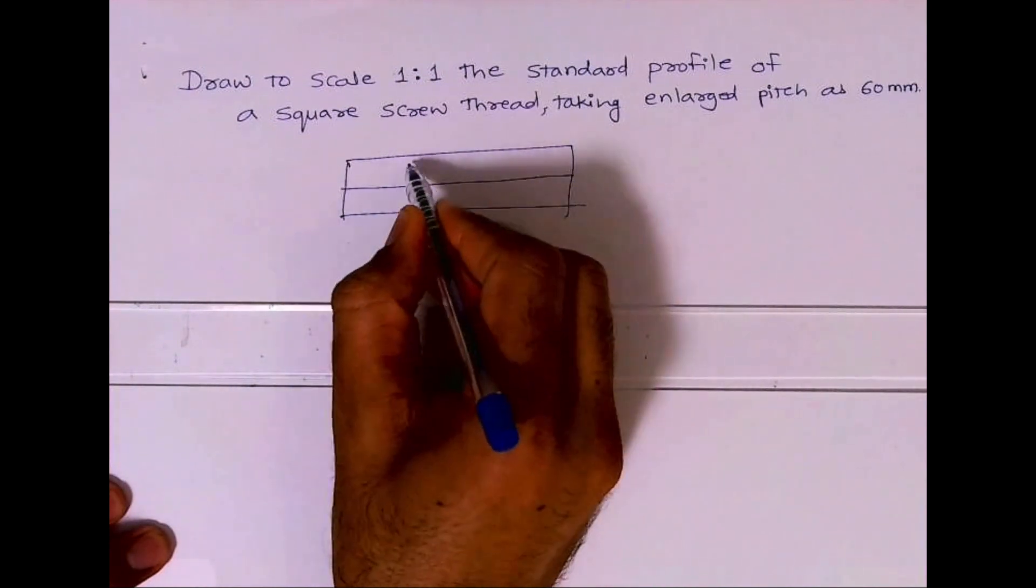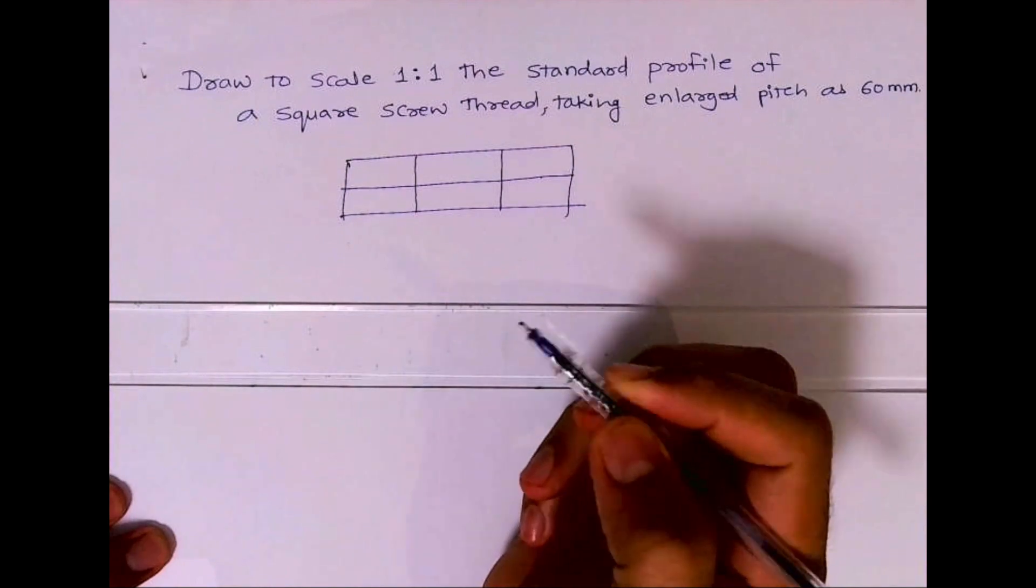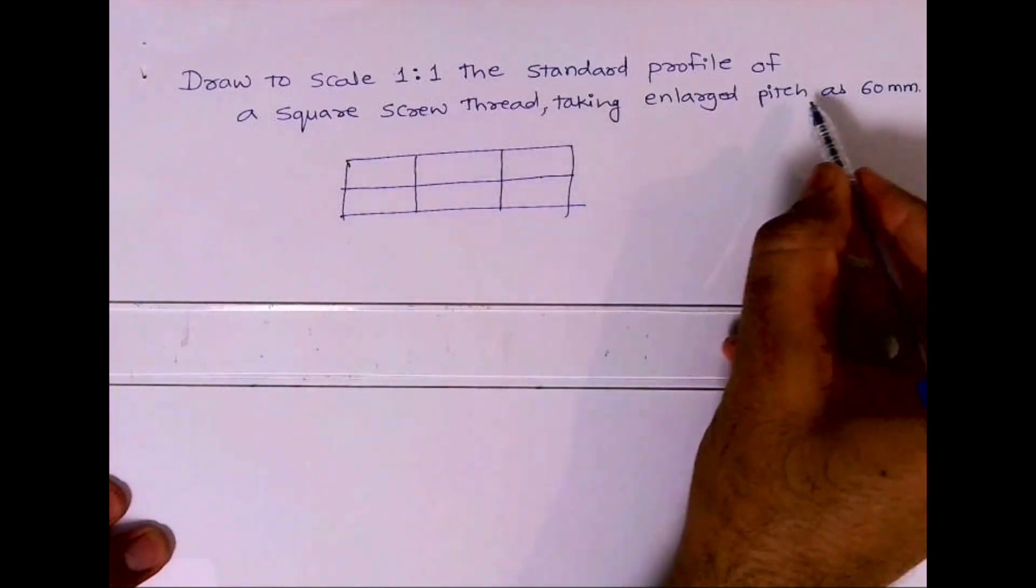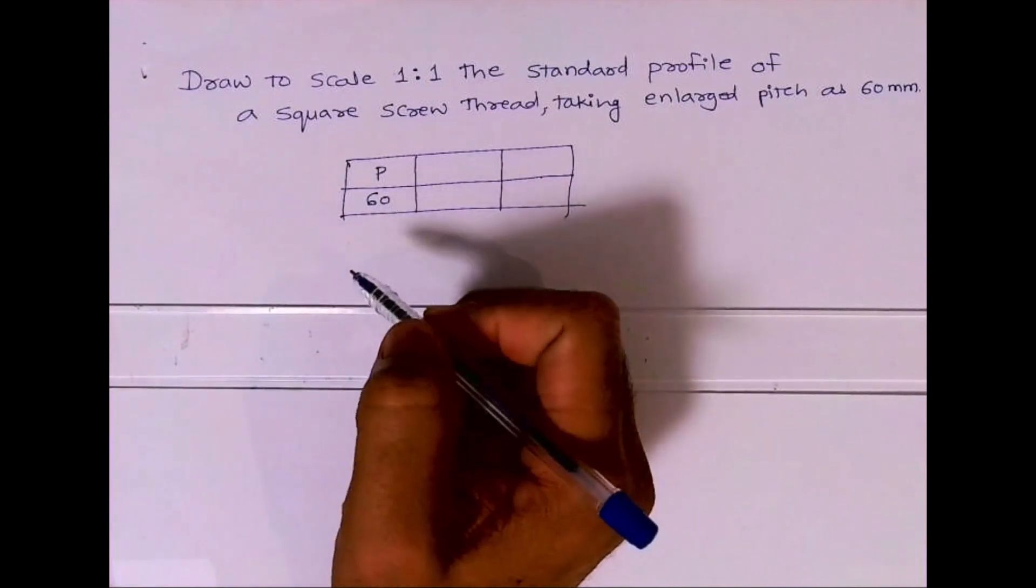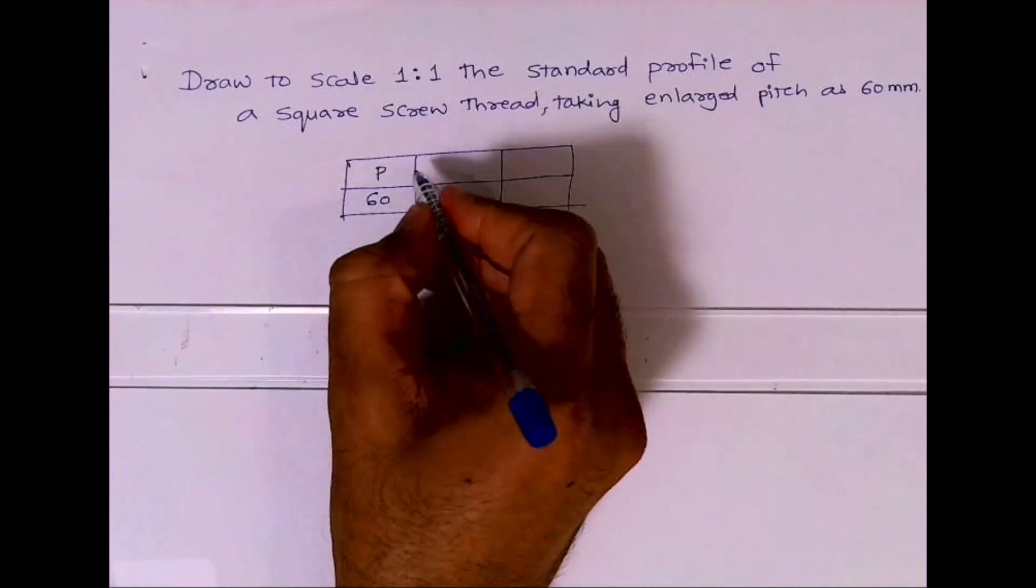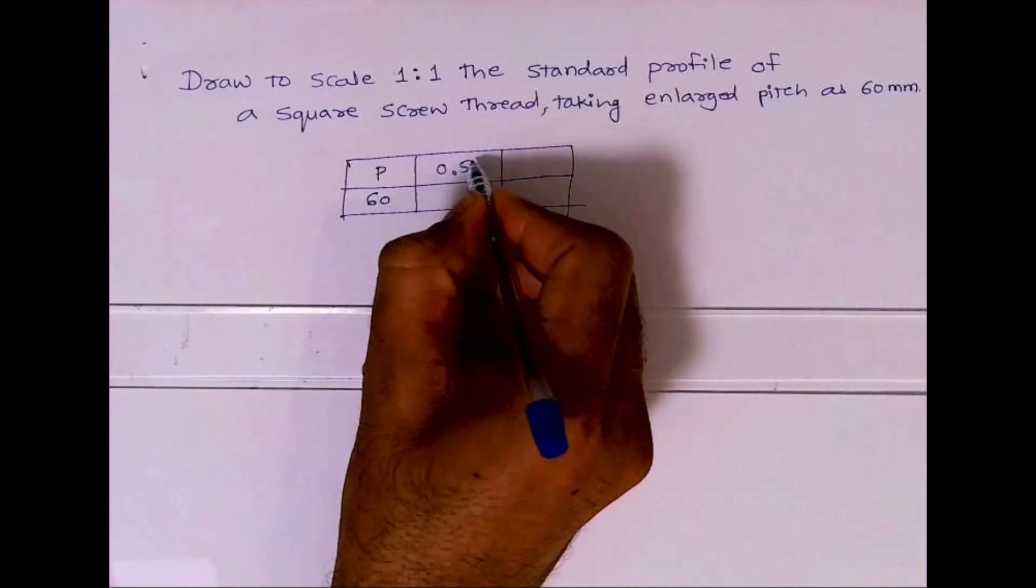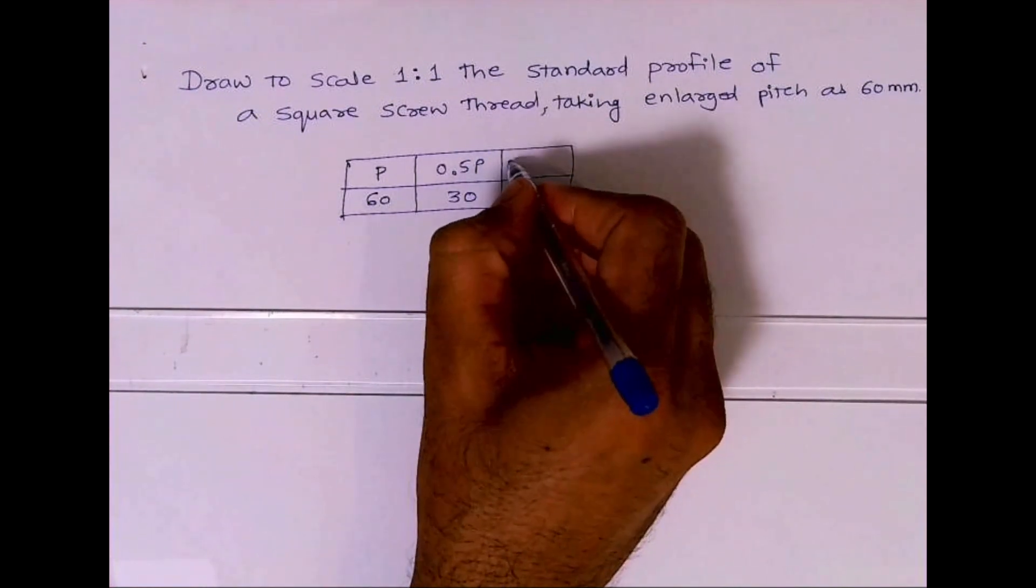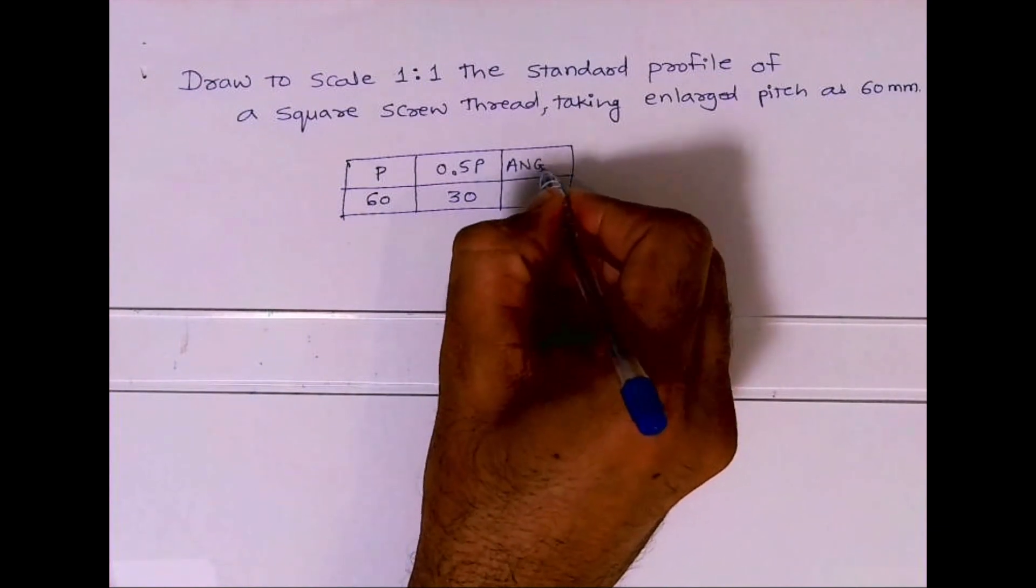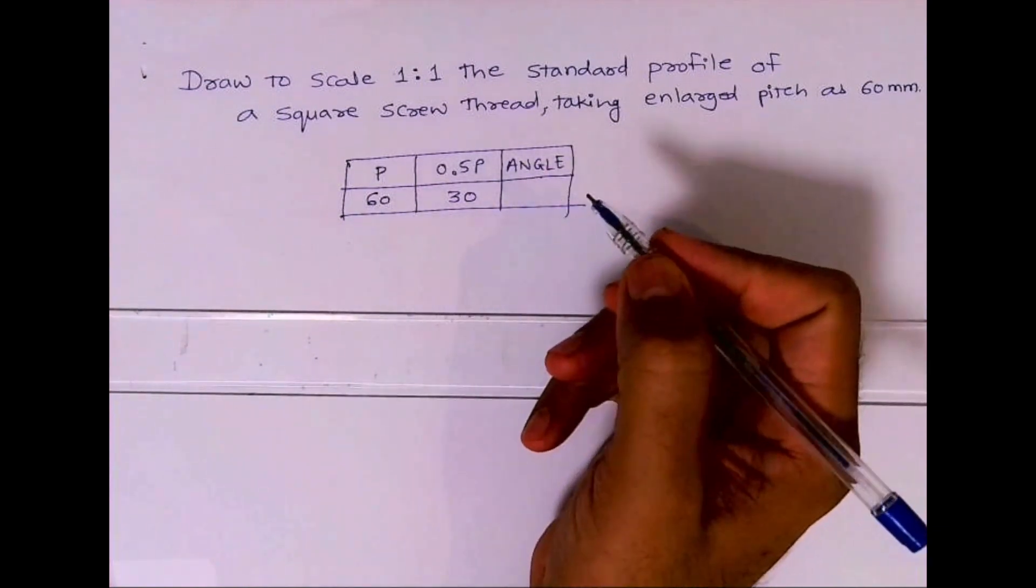First, we will draw a table. The pitch is 60mm, so p = 60. Therefore, 0.5p will be 30. The angle we have to take for a square thread is obviously 90 degrees.